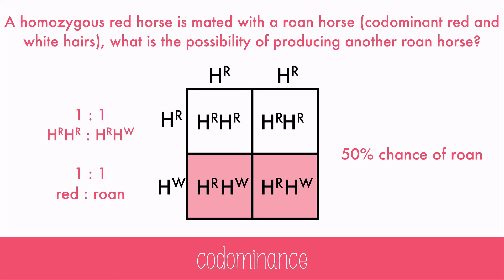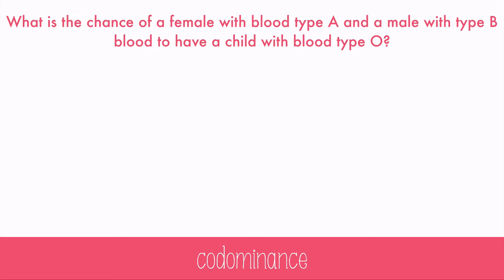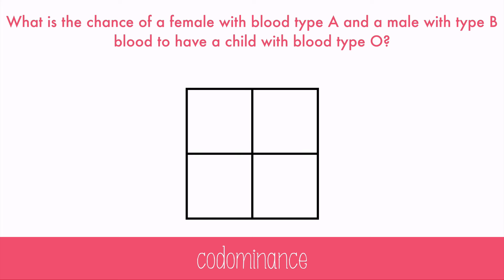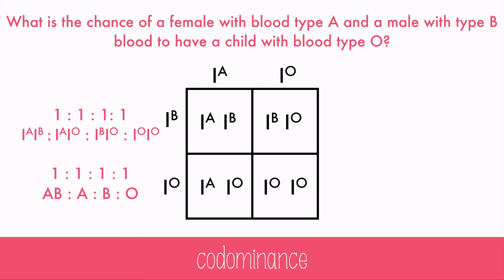Now let's try a blood type problem. What is the chance of a female with blood type A and a male with blood type B having a child with blood type O? We'll assume the people with type A and B blood are heterozygous; otherwise there would be no chance of having a child with blood type O. Blood type is commonly written with a capital I with a superscripted letter. Type A needs one A allele and the other can be O; type B needs one B allele and the other can be O. When these cross, there's a 25% chance of type AB, 25% type B, 25% type A, and 25% type O.